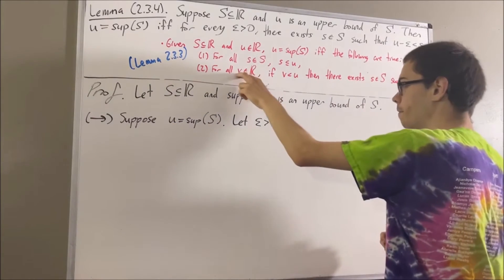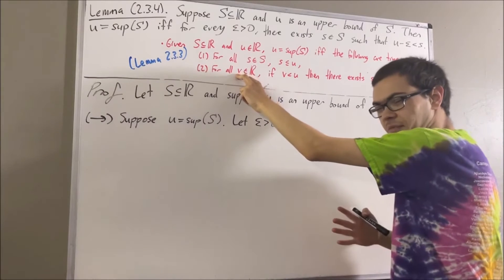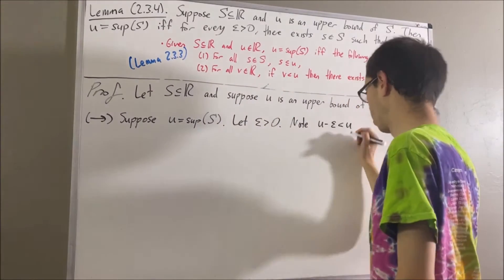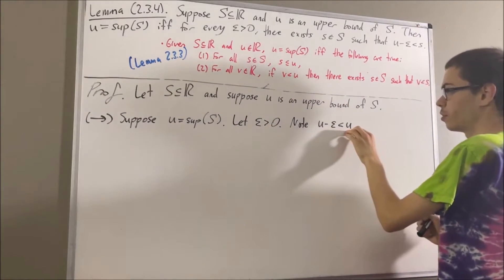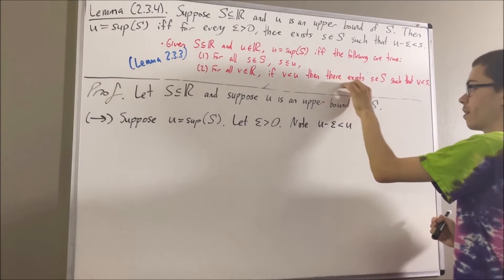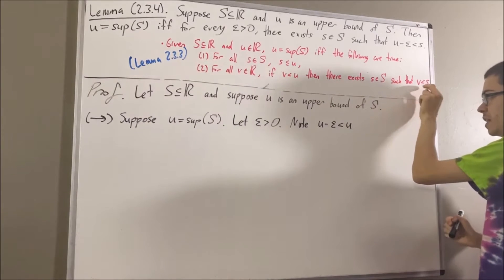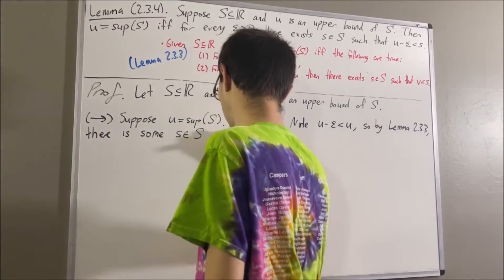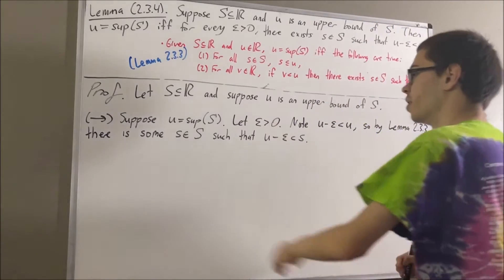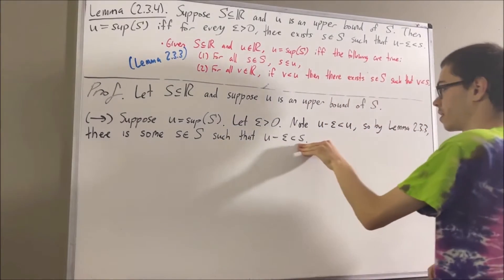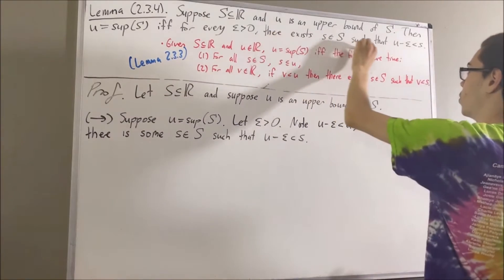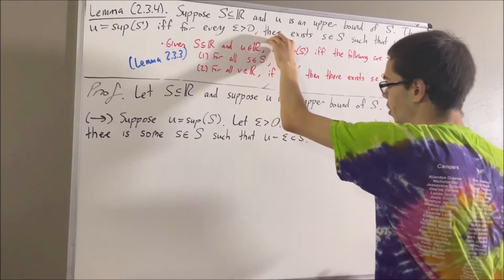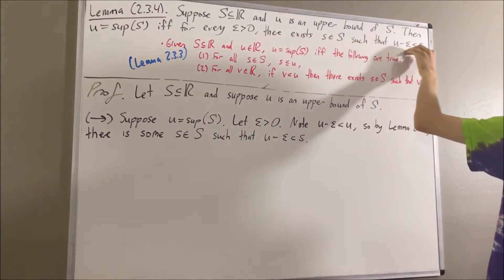Now we're going to take v to be the real number u minus epsilon, because u minus epsilon is less than u. And since u minus epsilon is less than u, it follows that there exists s in S such that u minus epsilon is less than s, which is exactly what we wanted to prove. And since epsilon was arbitrary, this means for every epsilon greater than zero, there exists an s in S such that u minus epsilon is less than s.